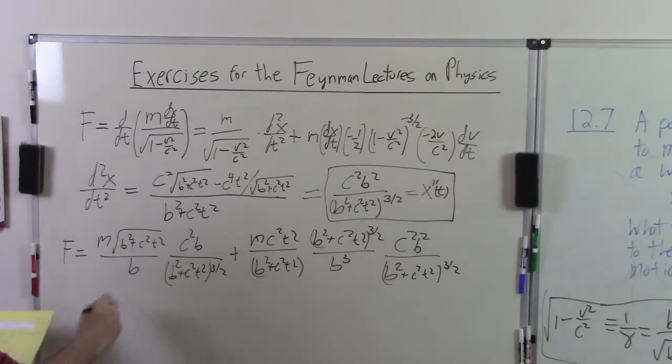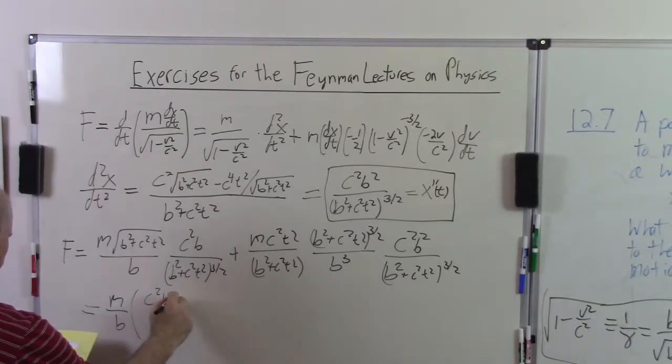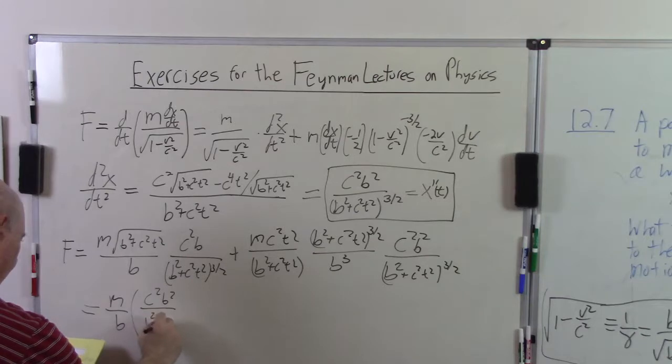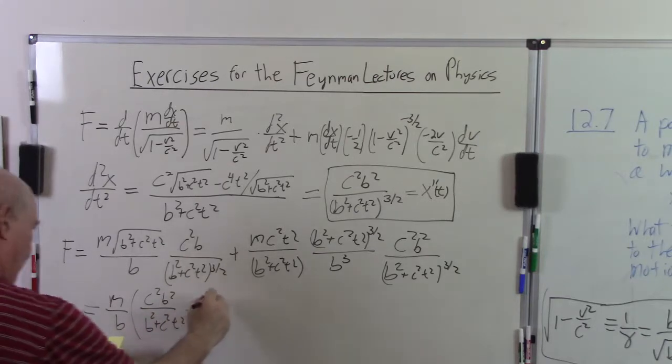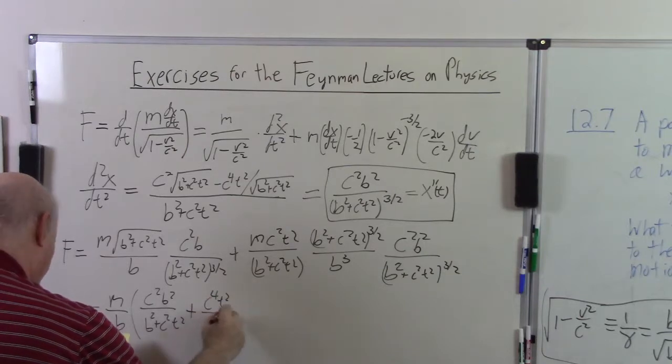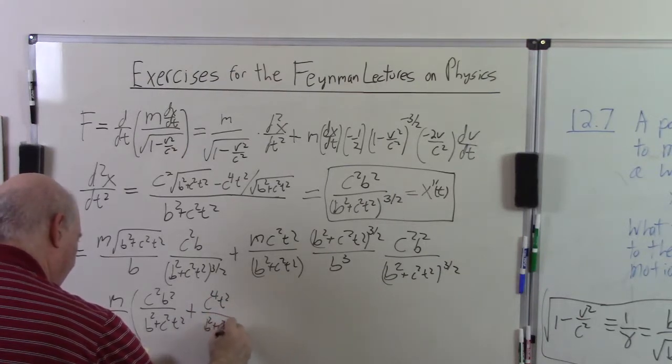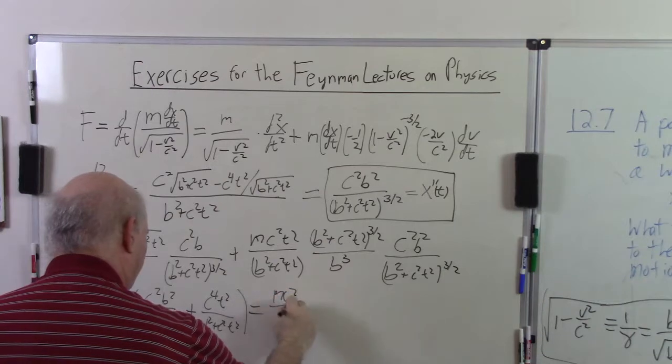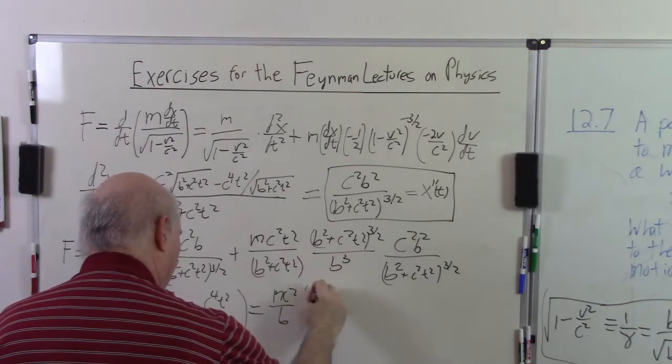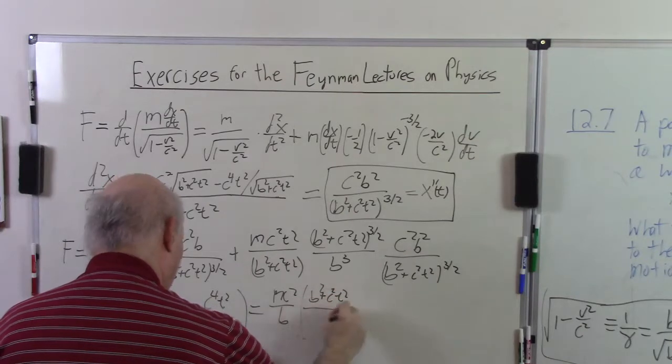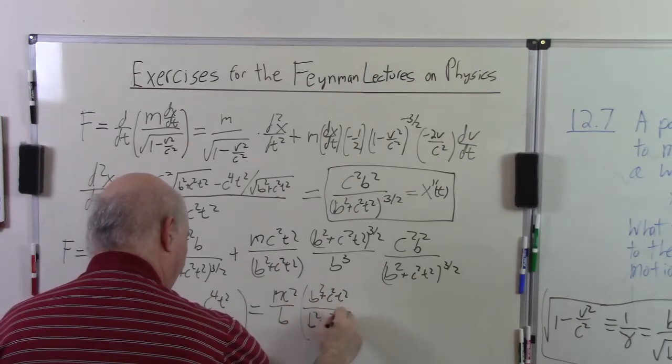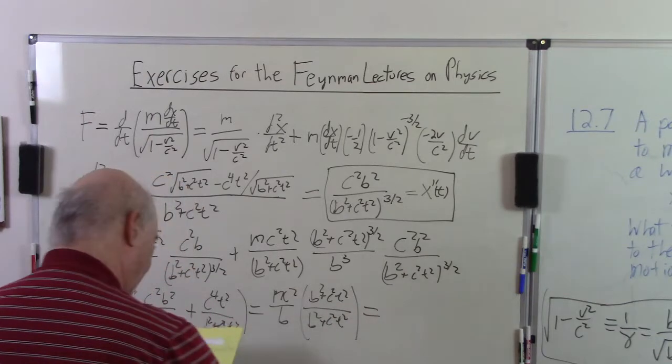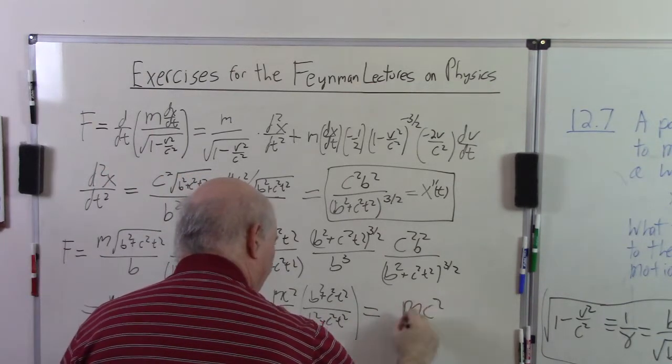And then, when you cancel the common factors and simplify, it's just going to come down to m over b times c squared, b squared, b squared plus c squared, t squared, plus c to the fourth. So the final result is just m c squared over b times b squared plus c squared, t squared, divided by b squared plus c squared, t squared. So the final result is just m c squared over b.